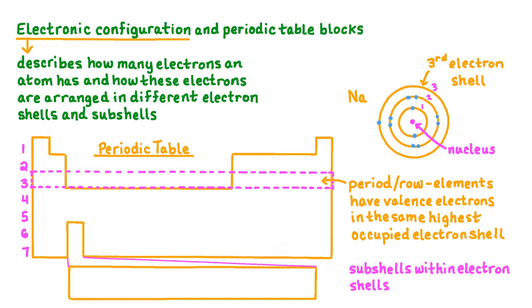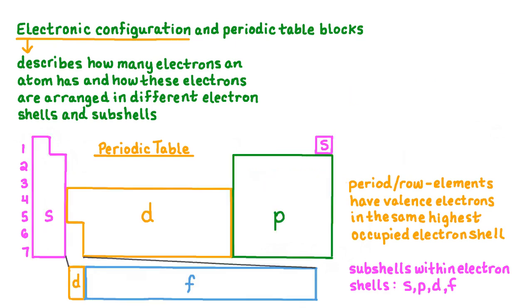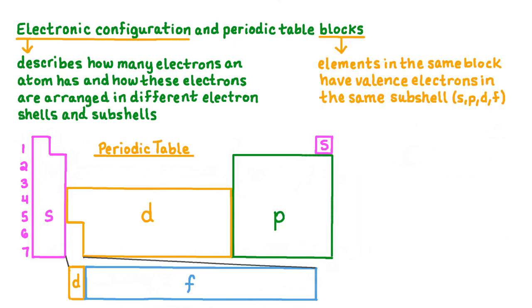Inside the electron shells are subshells which have a letter code based on the type of orbitals they contain. There are S, P, D, and F subshells. The periodic table can be divided into blocks that represent these subshells. Elements found in the same block have valence electrons in the same type of subshell. Elements found in the D-block, which are the elements in groups 3 through 12, have one or more valence electrons in a D subshell.